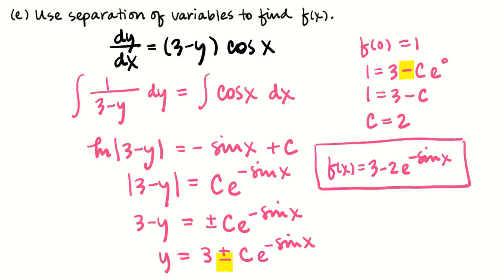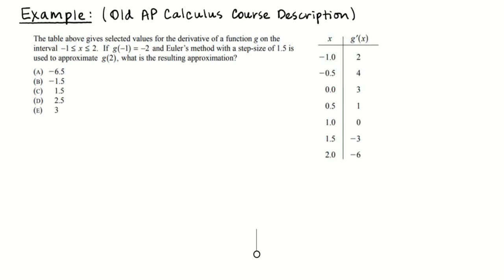So don't forget about separation of variables. Here's another Euler's method example from the old AP Calculus course description — it's a multiple choice question that's very representative of what you'd expect on the AP exam. On the AP exam I've seen one with three steps, but I've never seen more than three. In general it's probably going to be two steps — just testing whether you know how to do Euler's method at all.